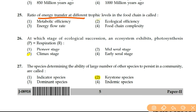Next: at which stage of ecological succession does an ecosystem exhibit photosynthesis equal to respiration? At the climax stage — when ecological succession reaches the climax stage, photosynthesis (primary productivity) is equal to respiration. Whatever food is produced is also consumed. That is the climax stage. Next: the species that determines the ability of a large number of other species to persist in a community is called the keystone species. Without the keystone species, the community cannot survive.